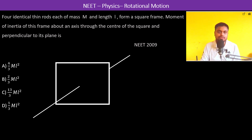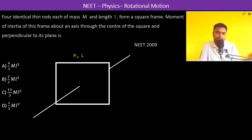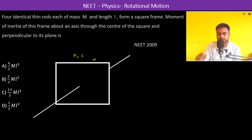Four identical thin rods of mass M and length L form a square frame. We need to find the moment of inertia of each rod of the frame about an axis through the center of the square and perpendicular to its plane. Let us first find the moment of inertia of each thin rod.